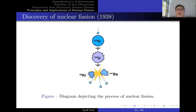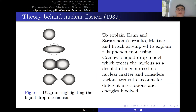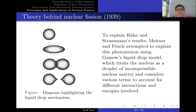Lisa Meitner and her nephew Otto Frisch used theory and mathematics to show that Hahn and Strassmann's results were entirely possible. The story is that they were discussing it in the snow and did back-of-the-envelope calculations. Meitner had the brilliant idea to use Gamow's liquid drop model: just as a liquid drop can become oblong and split when tiny drops are added to it, a similar principle applies to atomic nuclei. The mathematics is complicated, but the reasoning is very interesting.